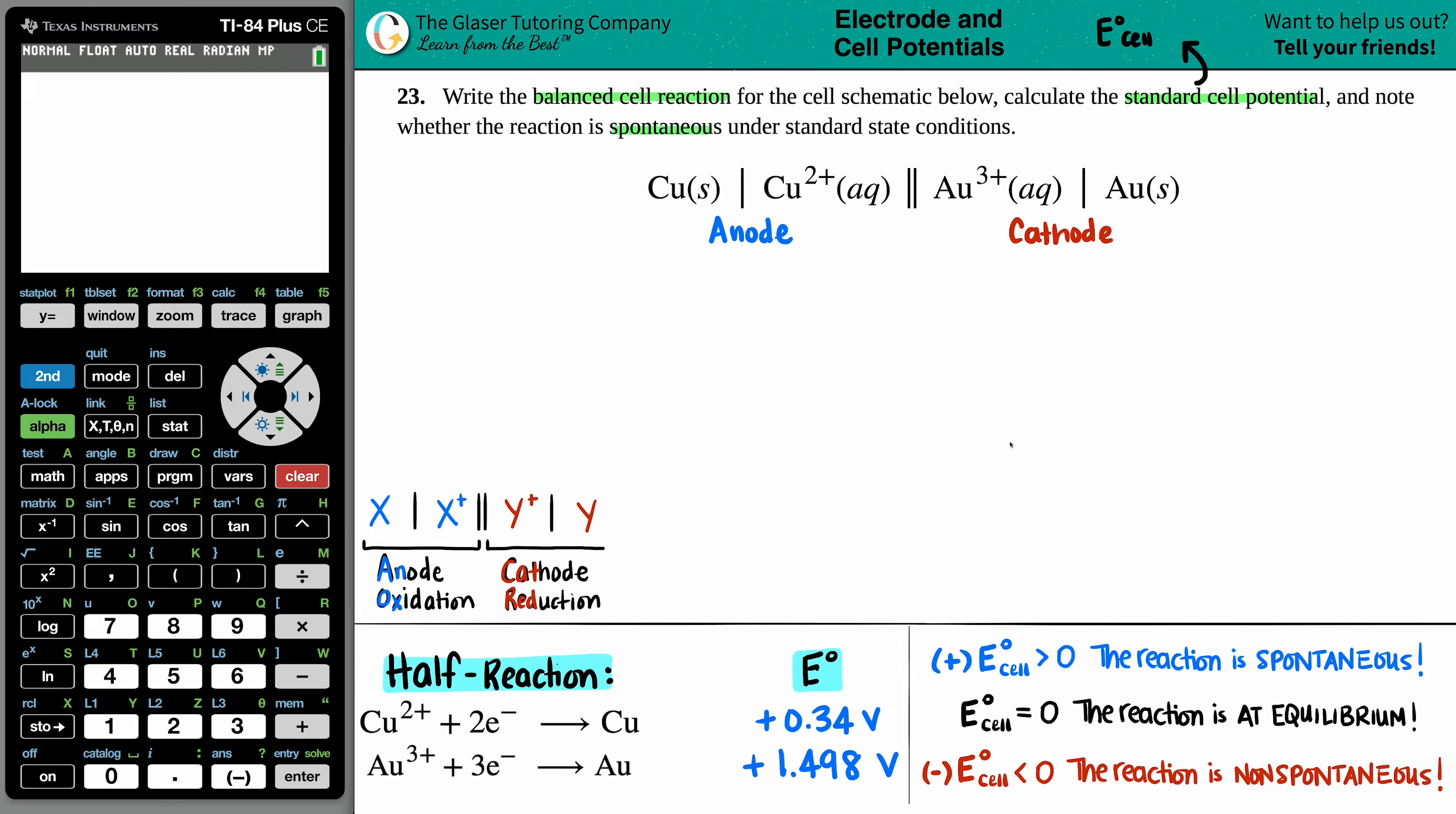And this comes in a lot of help because the formula to find the E cell is this. The E cell is the cell potential of the cathode minus the cell potential of the anode. Easier, you could just say cathode minus anode. And it's easy because we already know from the schematic who's the cathode and who's the anode. We don't even have to worry about who's more positive or who's more negative. The cell schematic will tell us that. So the cathode was the Au and the anode was the Cu.